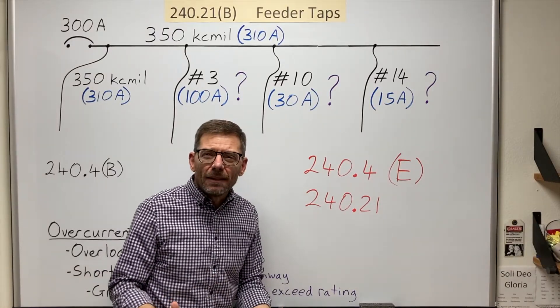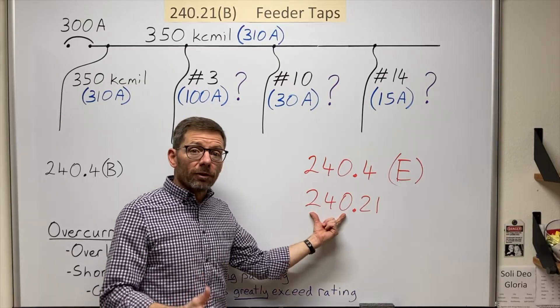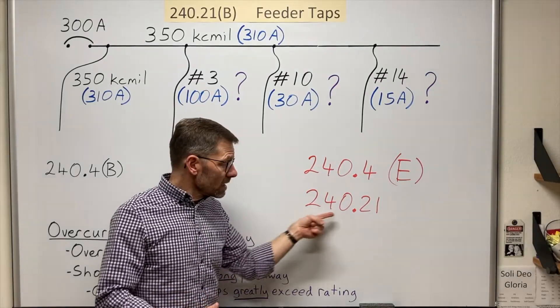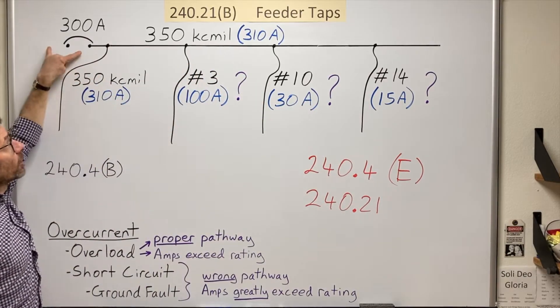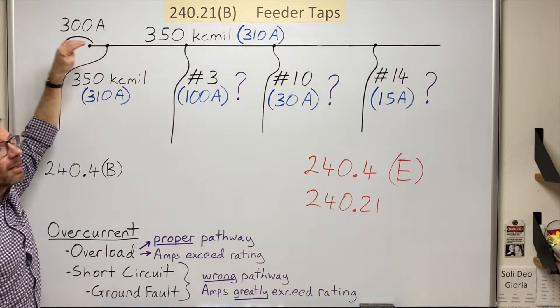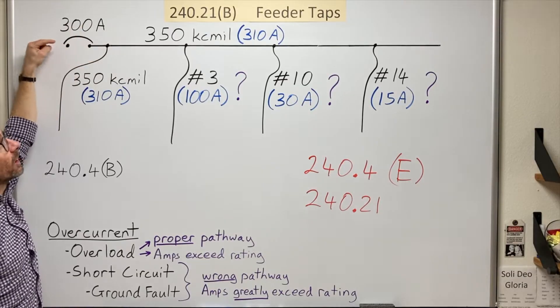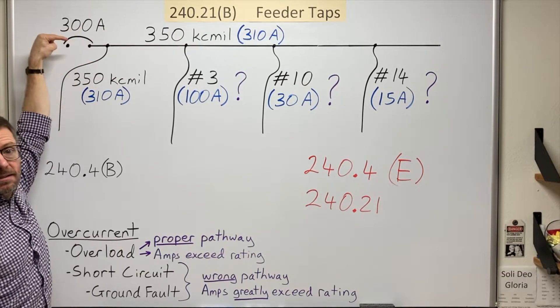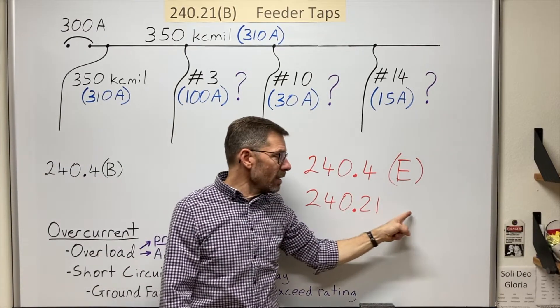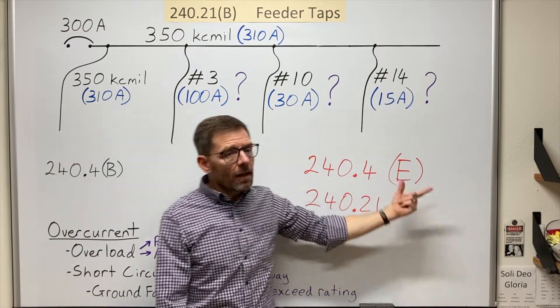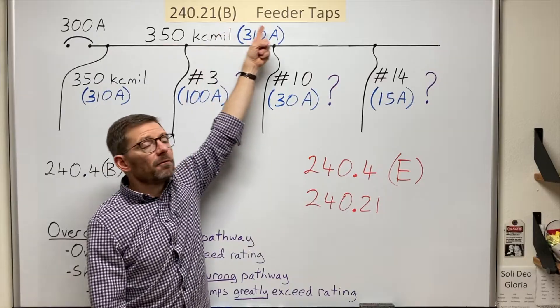But what does that mean? Well, Article 240 is about overcurrent protection. So this section is wondering where in the circuit should the overcurrent protection be? And it tells us it should be at the beginning of the circuit, where the conductors get their power unless allowed in A through H. And that's where we bump into B here, feeder taps.